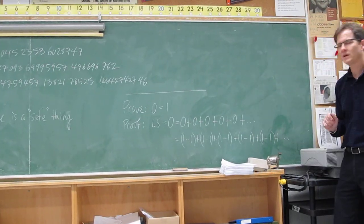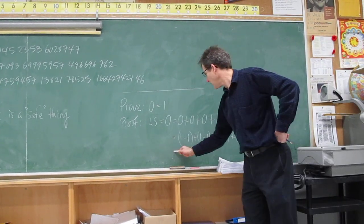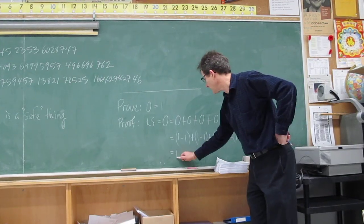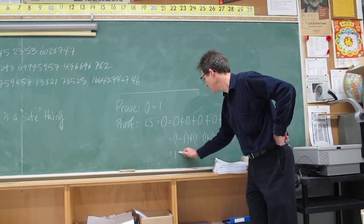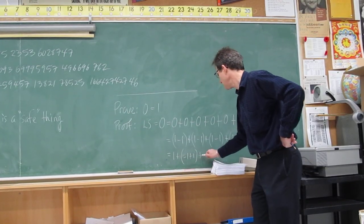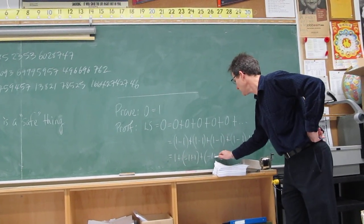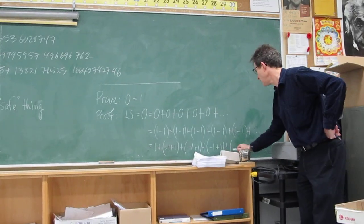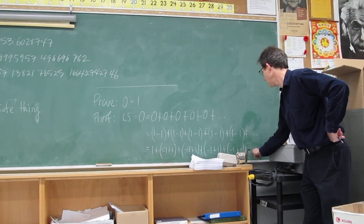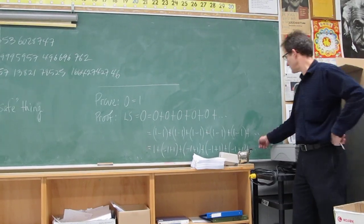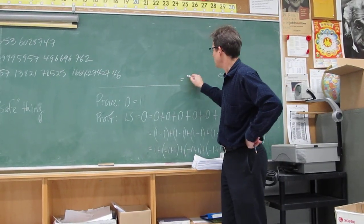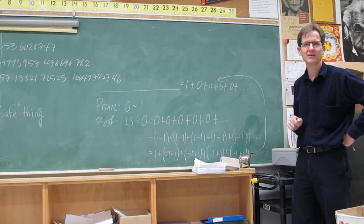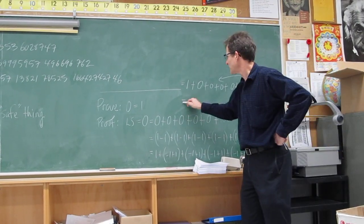I'm a little short one, but it doesn't matter — that's true. But I don't need those brackets, as I just said, and I can group those numbers differently. So I can group, for example, the second and the third ones. So it's 1, plus (minus 1 plus 1), plus (minus 1 plus 1), plus (minus 1 plus 1), forever and ever, amen — I just keep going. But what's that equal to? If I do that, I get 1 plus 0, plus 0, plus 0, plus a whole bunch of 0s.